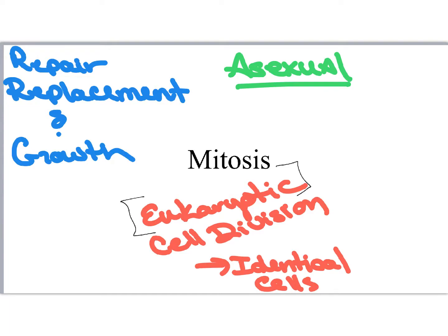It's not just that we use one type of cell division — we use a couple. This is just one of them. Specifically, this one is an asexual form, which means we're making identical clone cells — exact copies of each other. We use these for repairing tissues, replacing damaged cells, and of course growing and getting larger. Since this is pretty complex, I'm going to walk you through the steps of mitosis.